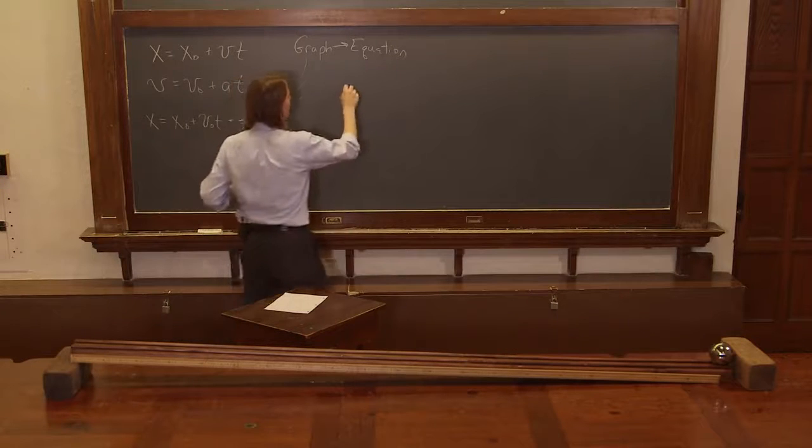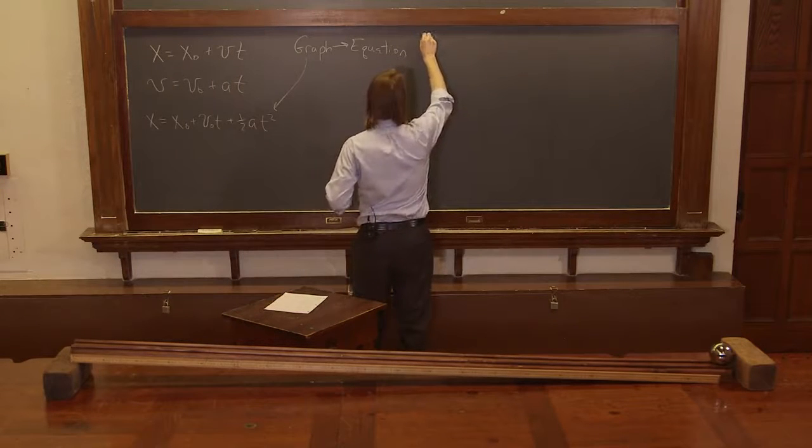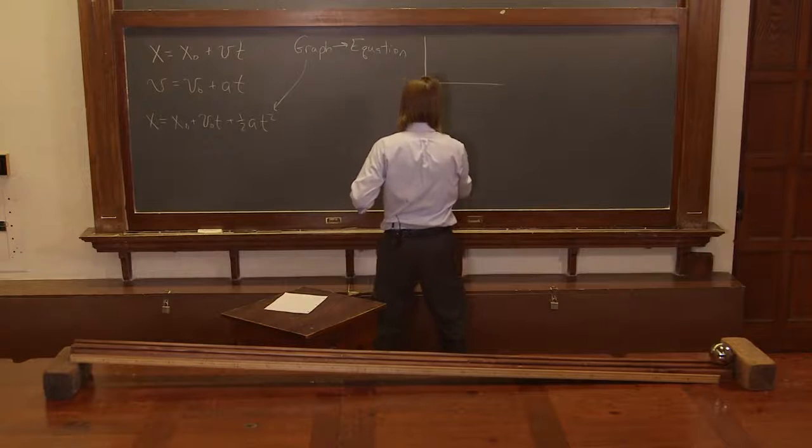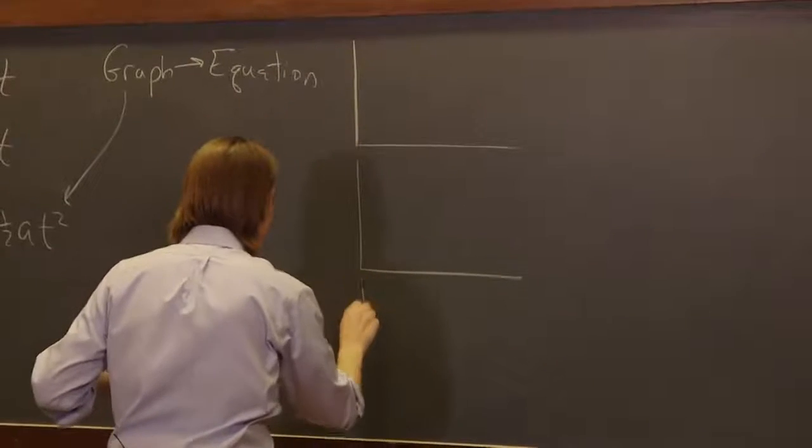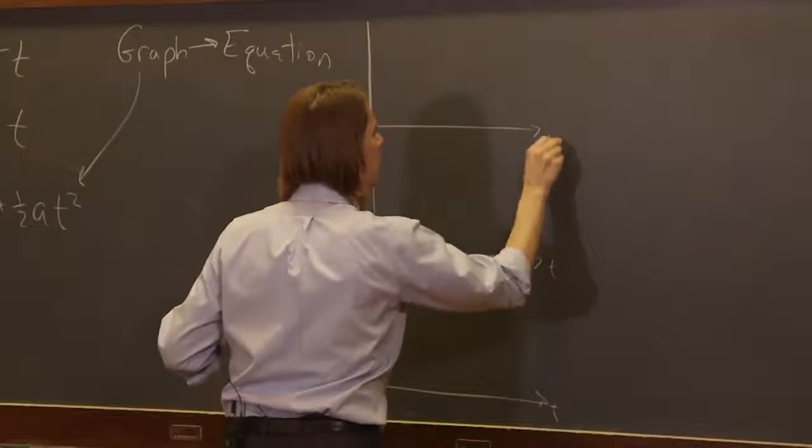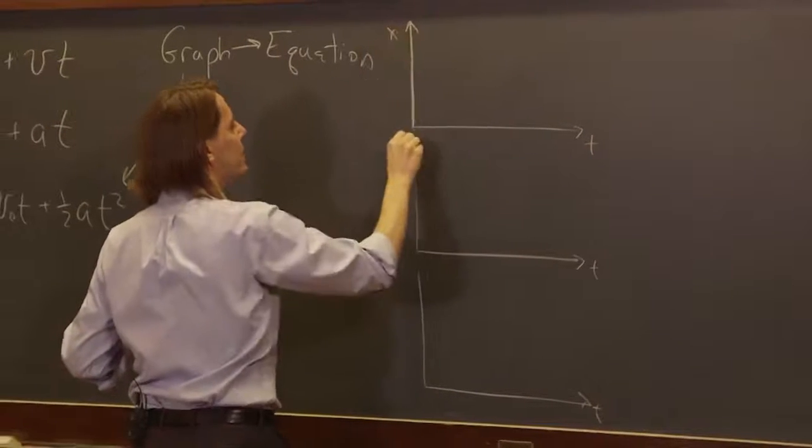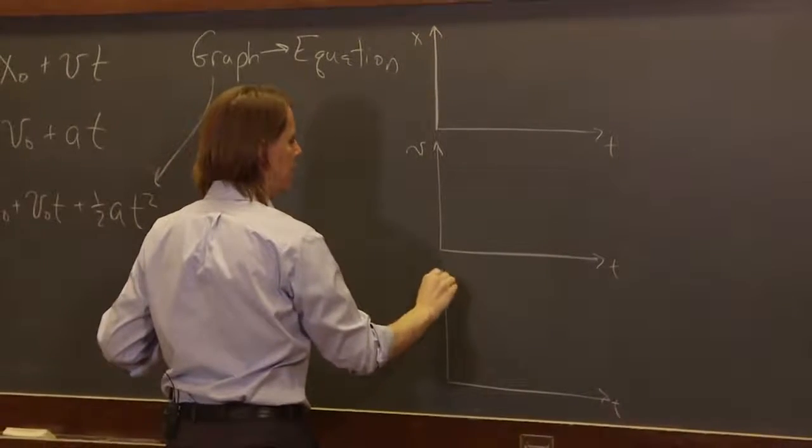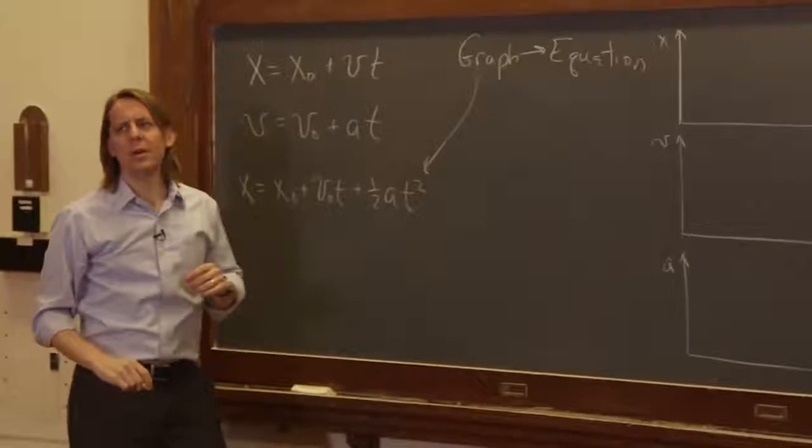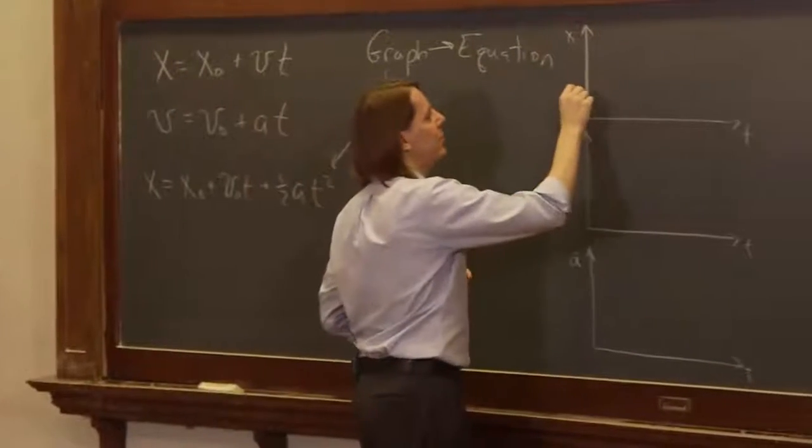Okay, so we're going to plot the position versus time, the velocity versus time, and the acceleration versus time. And here's x and here's v and here's a. So let's see. We didn't start at the origin. We started at some x naught.